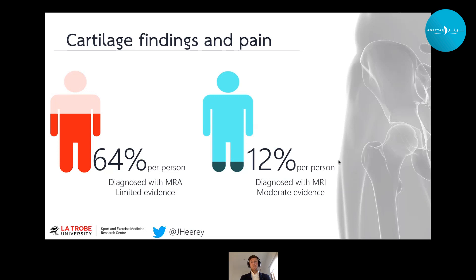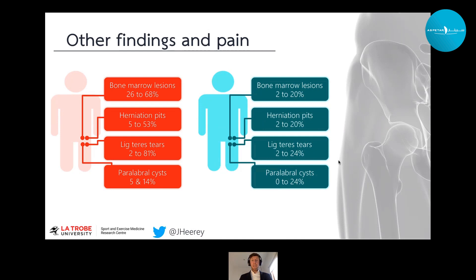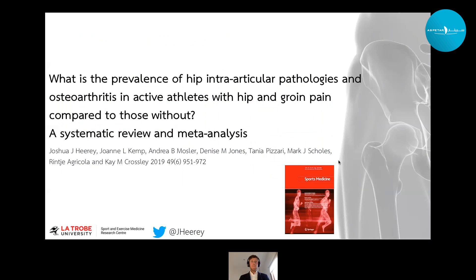For cartilage conditions, we saw a high prevalence in individuals with hip and groin pain, but a substantially lower prevalence in asymptomatic individuals. However, the asymptomatic individuals included were younger than those in the symptomatic studies, and age is associated with both the prevalence and severity of cartilage deterioration. Data from my PhD shows that when individuals are matched by age, sex, and level of activity, we actually see a very similar prevalence of cartilage findings in those with and without pain.